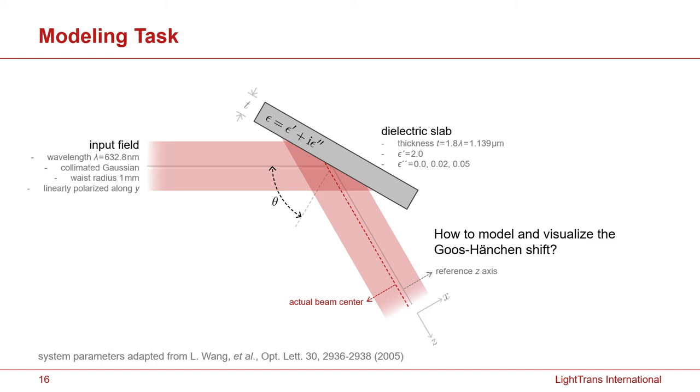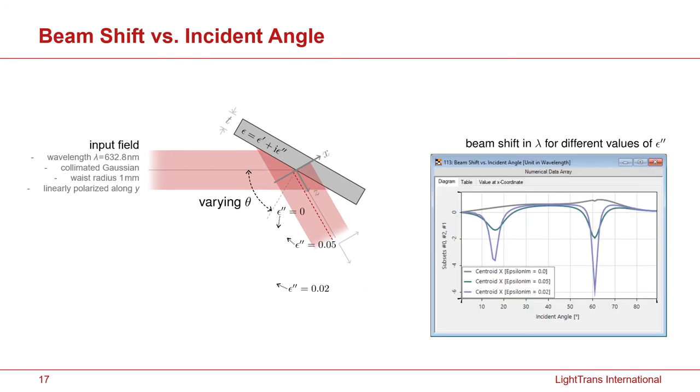With respect to the incidence angle change, we also try to measure and visualize the Goos-Hänchen shift. And during that, we also change the absorption coefficients for the dielectric slab.